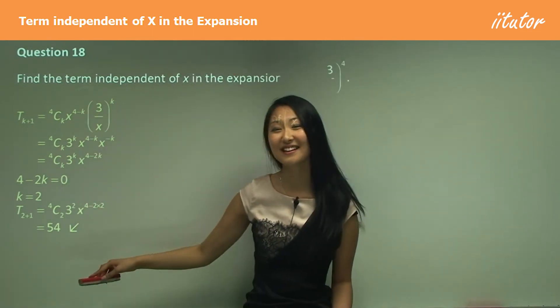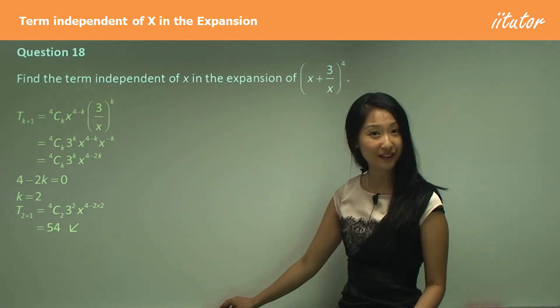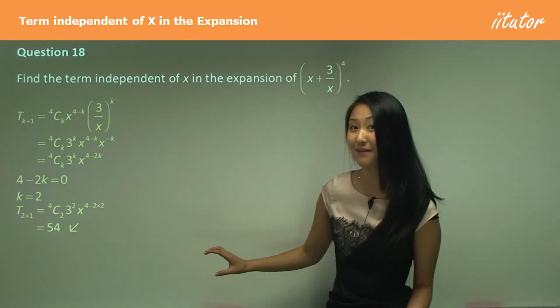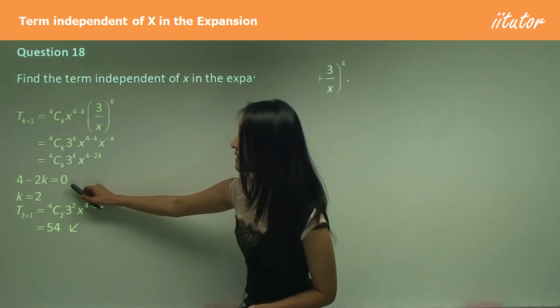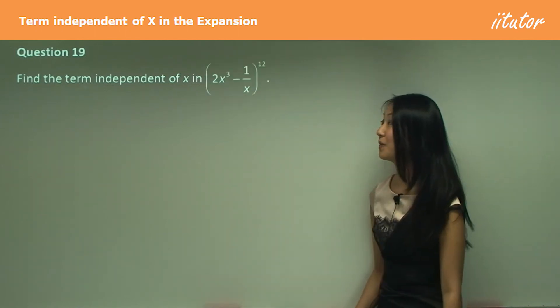You can see this is very similar to when we work out the coefficient, following pretty much the exact same pattern. The only difference is we make it equal to 0 here. Let's look at the next question.